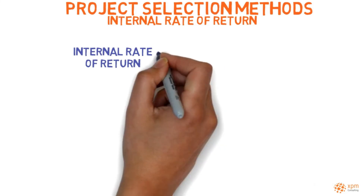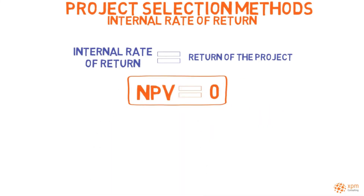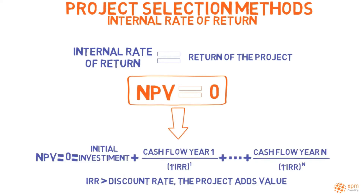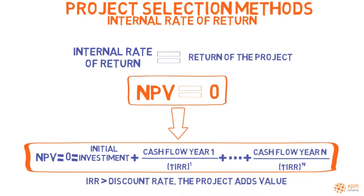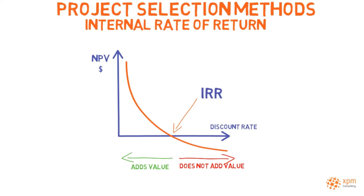The internal rate of return assesses the return of the project by calculating which discount rate would make the net present value equal to zero. If the internal rate of return is greater than the discount rate, the initiative adds value. You do not need to know how to calculate the IRR — you just need to understand the concept. In this chart, you can see how the net present value drops if the discount rate were to increase, and notice that the rate where the net present value equals zero is the internal rate of return.